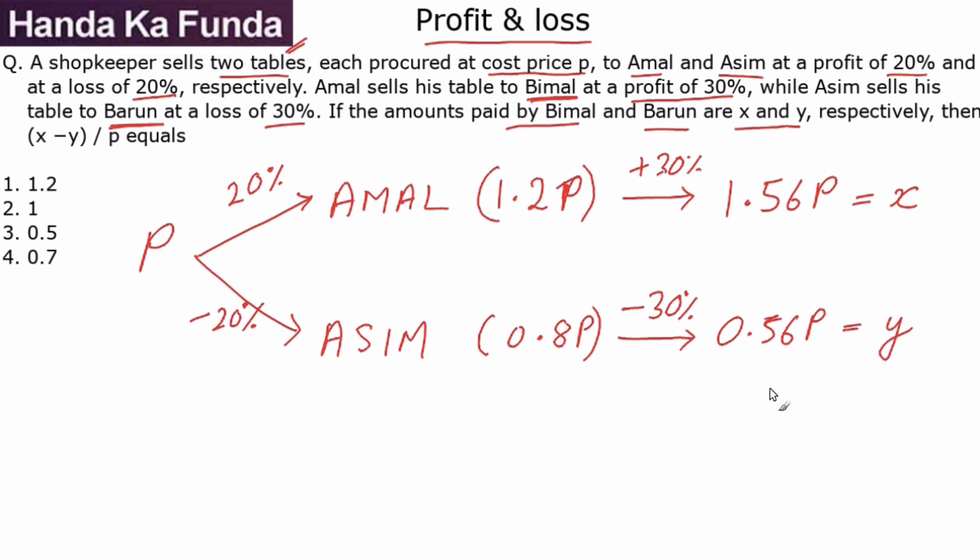Then we need to calculate (x - y) divided by p. So how much is x minus y? 1.56p minus 0.56p is nothing else but p. And what is p by p? p by p is 1.